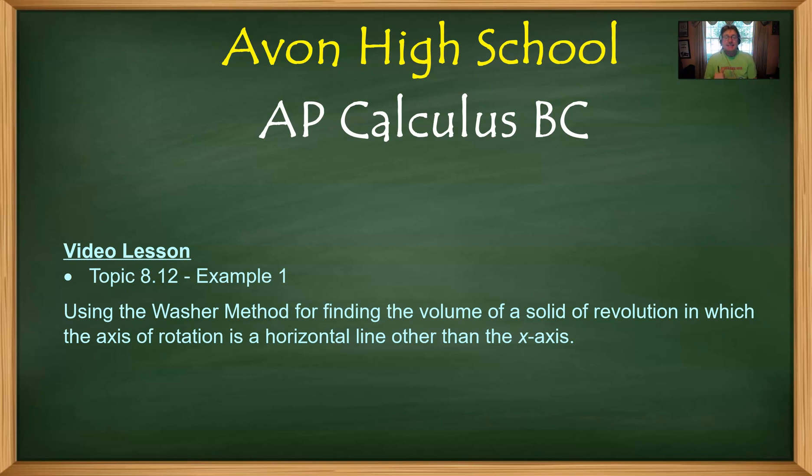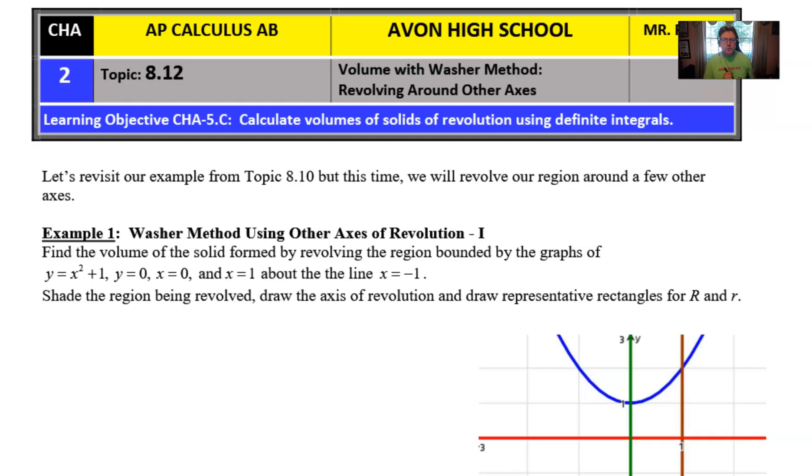What we're going to be looking at is our example one, which is using the washer method in order to find the volume of a solid of revolution. But we're going to change things up and rotate around an axis other than the x-axis, which is pretty much the peak of the difficulty level for this kind of idea. So if we move on to our notes, we see that there's one example here that's going to focus on that very idea. It says to find the volume of the solid formed by revolving this region bounded by the graphs y equals x squared plus 1, and you'll notice I have gone ahead and sketched those for you in the notes. At this point, I figured that you were getting pretty used to graphing some of these mundane functions, so let's get right to it.